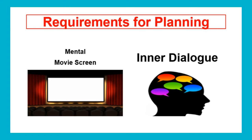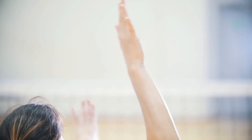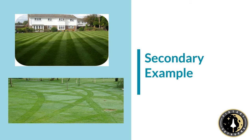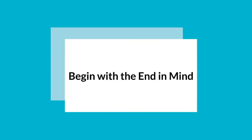Secondary students likely use their mental movie screens and inner dialogue without even realizing it — visualizing what the lawn looks like after it has been mowed in order to plan which direction to push the mower, mentally walking themselves through an at bat or a volleyball serve, or even mentally rehearsing asking a parent for an increase in allowance. These planning prerequisites become increasingly more important when planning multi-step projects, assignments with due dates in the extended future, and balancing academics with extracurricular activities.